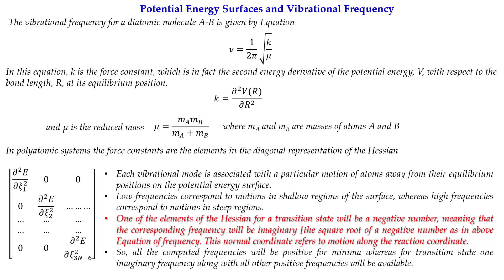Molecular vibrations mean that atoms have particular motions away from their equilibrium positions on the potential energy surface. Low frequencies correspond to shallow regions of the surface, whereas high frequencies correspond to steeper regions. For a polyatomic molecule at the transition state, all force constants will be positive except one, which will be negative, because that coordinate is a maximum.